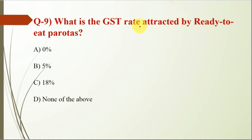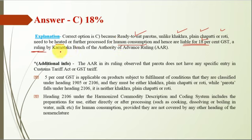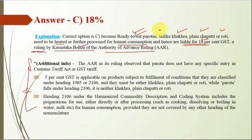Question number 9: what is the GST rate attracted by ready-to-eat parathas? The correct option is C — 18%. Ready-to-eat parathas, unlike khakra, plain chapatis, or roti, need to be heated or further processed for human consumption, and hence are liable for 18% GST. This ruling was given by the Karnataka bench of the Authority for Advance Ruling. Remember that the GST rate for chapati and parathas are different — details are in the additional information provided.